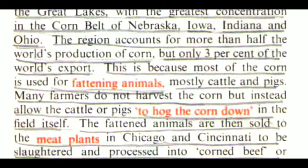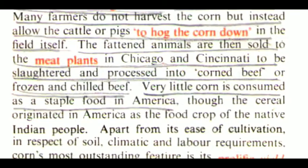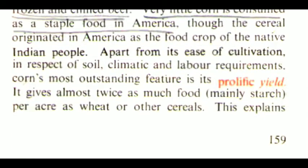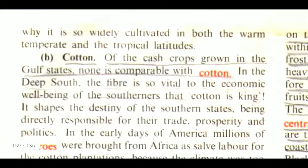The region accounts for more than half the world's production of corn but only 3% of the world's export. This is because most of the corn is used for fattening animals, mostly cattle and pigs. Many farmers do not harvest the corn but instead allow the cattle or pigs to consume the corn down in the field itself. The fattened animals are then sold to the meat plants in Chicago and Cincinnati to be slaughtered and processed into corned beef or frozen and chilled beef. Very little corn is consumed as a staple food in America, though the cereal originated in America as the food crop of the native Indian people. Apart from its ease of cultivation, corn's most outstanding feature is its prolific yield — it keeps almost twice as much food, mainly starch, per acre as wheat or other cereals. This explains why it is so widely cultivated in both the warm temperate and the tropical latitudes.